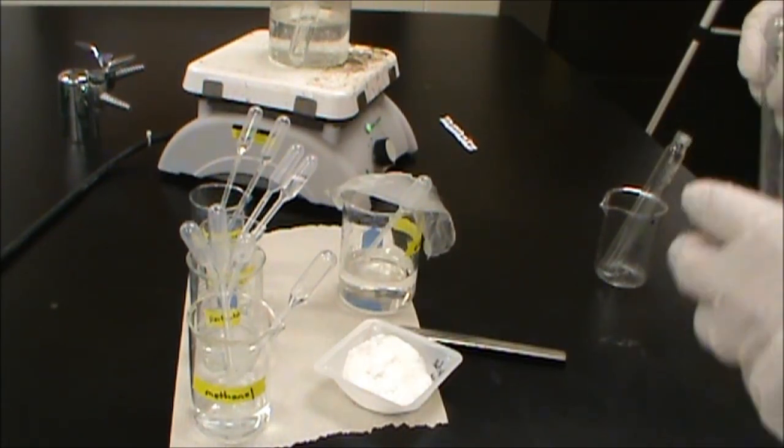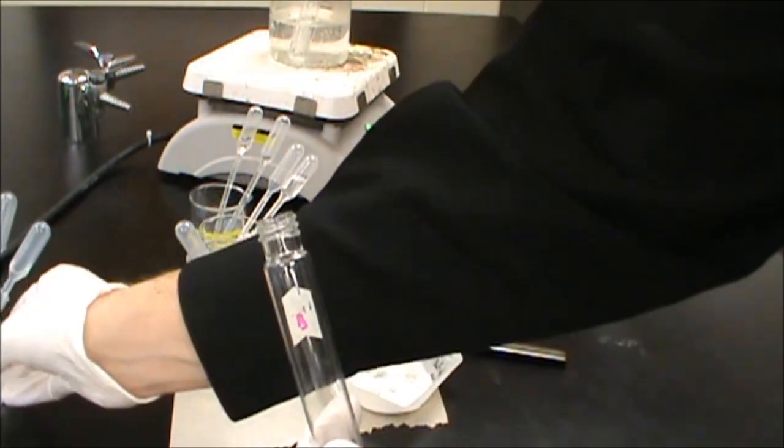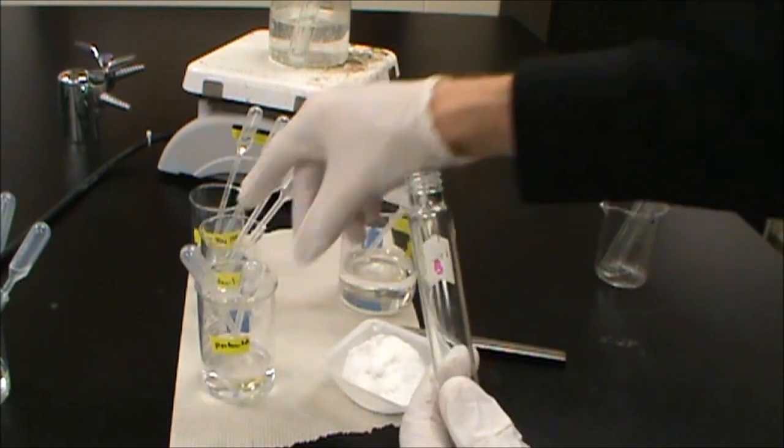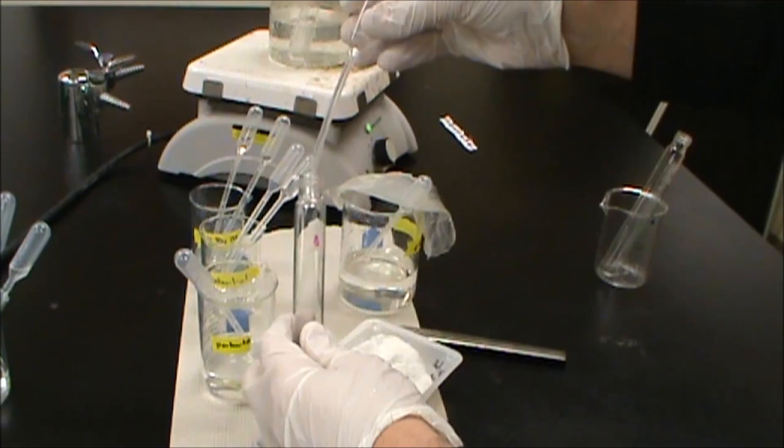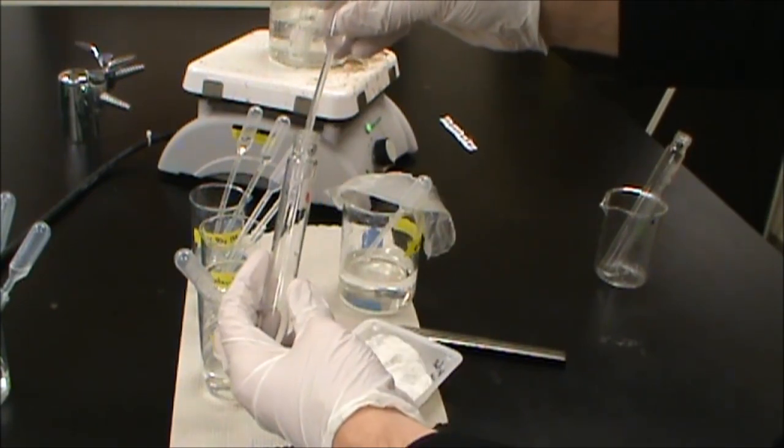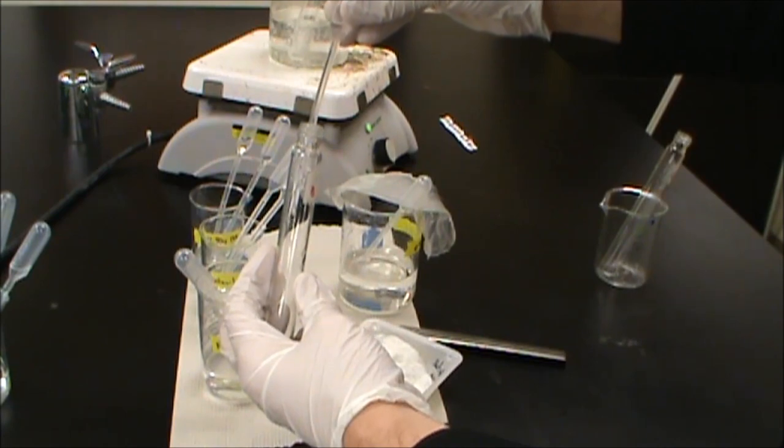Then we're going to go ahead and start our second one. So test tube B. So for that, we're going to take pentanol, pentan-1-ol. And we're going to do about 20 drops of that.